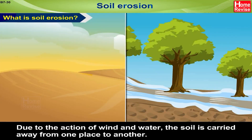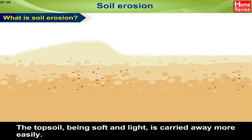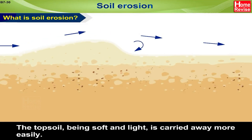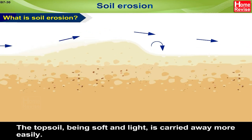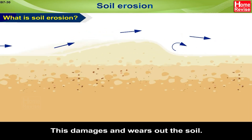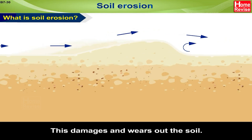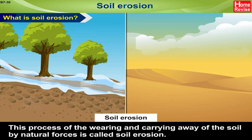Due to the action of wind and water, the soil is carried away from one place to another. The topsoil, being soft and light, is carried away more easily. This damages and wears out the soil. This process of the wearing and carrying away of the soil by natural forces is called soil erosion.